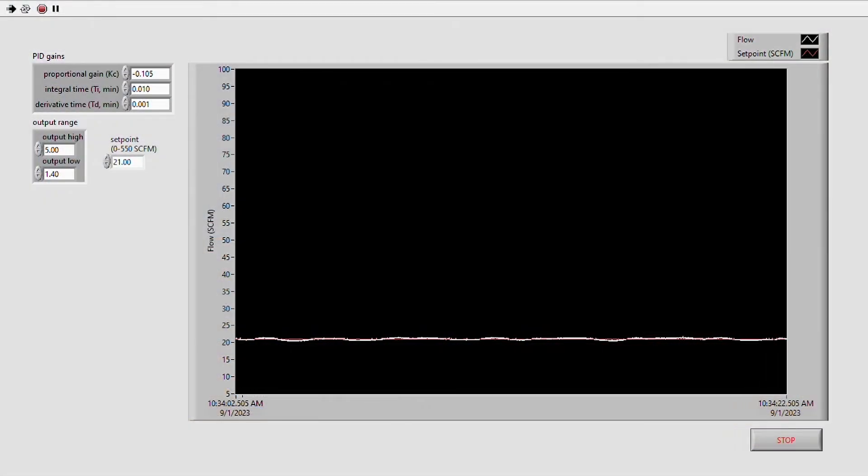This is the LabVIEW VI we are using to control and observe our gas flow control setup. The red line on the graph is our flow set point, and SCFM in the white line is the measured flow as reported by our flow meter. You can see that the flow is stable around our set point of 21 SCFM with a bit of noise that's acceptable given the full range of the flow meter.